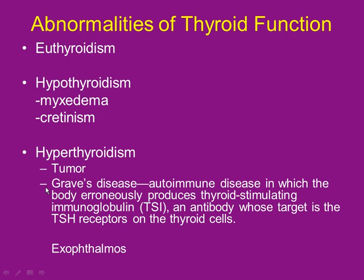The most common form of hyperthyroidism is Graves' disease, which is autoimmune. Your body makes antibodies that attack the receptors on your thyroid usually stimulated by TSH. They act like TSH — called TSIs, thyroid-stimulating immunoglobulins — they plug into the receptor and act like a key, turning on the thyroid to crank up production of T3 and T4.